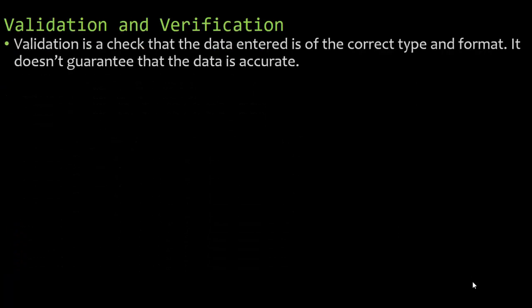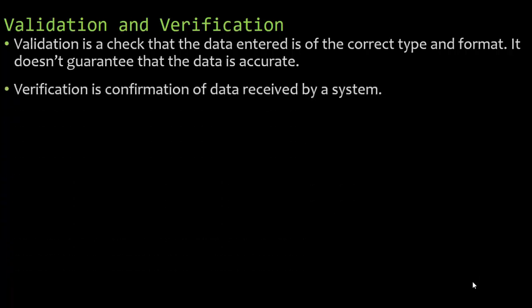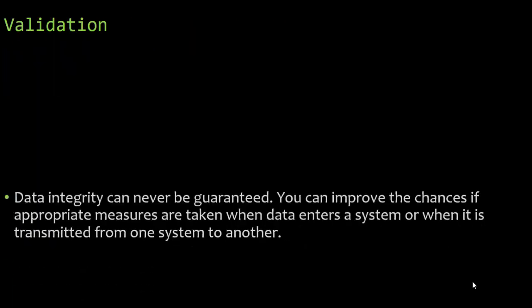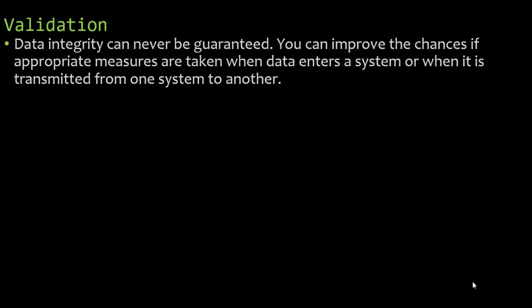Validation is a check that the data entered is of the correct type and format. It doesn't guarantee that the data is accurate — it just confirms data is in the right format. Verification is a confirmation of data received by a system. That is the difference between those two.